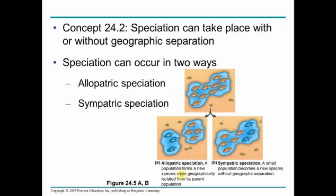Here we have a population of fish. Allopatric speciation is when a small subset or small group gets isolated from the parent population and they form a new species — you might even think this is tied to the founder effect. Sympatric speciation means a new speciation occurs within that population where they are still in the same place. 'Symp' means same, so a small population becomes a new species without geographic separation; there might be some other kind of reproductive isolation occurring.